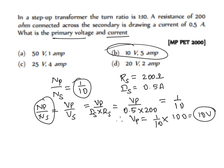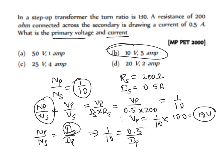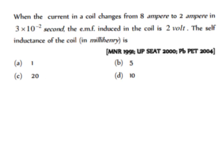Now for the primary current: NP/NS = IS/IP gives 1/10 = 0.5/IP, so IP = 0.5 × 10 = 5 ampere. Therefore, the primary voltage is 10 volt and the primary current is 5 ampere respectively.